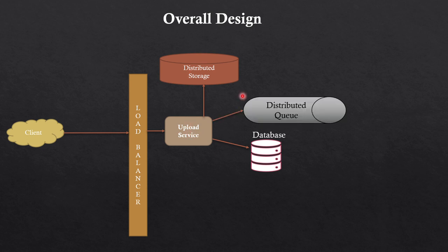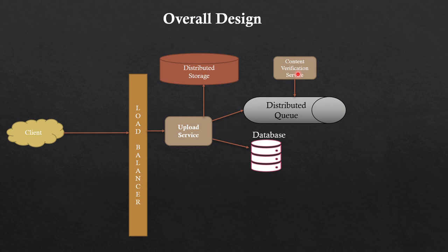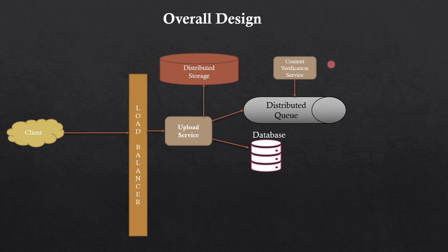Once the video is uploaded and put in distributed storage, we'll put an event in a distributed queue. This event serves as an indication to other services to start their work. We will have a content verification service to check that whatever video the user has uploaded does not harm anyone — it should not contain violent content, altered content, or content that defames someone. Rules will be applied to the uploaded video.